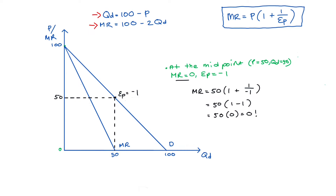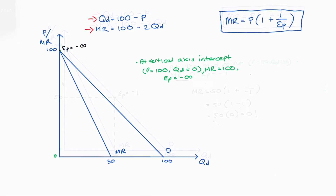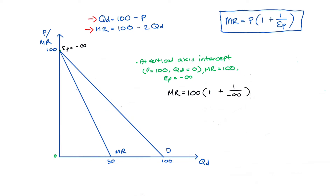Let's now try the vertical axis intercept, where elasticity is negative infinity, price is 100, and quantity is zero. Our formula gives: marginal revenue equals 100 multiplied by 1 plus 1 divided by negative infinity. The question is how do we evaluate 1 divided by negative infinity? This value is technically undefined because negative infinity is not an actual number. What we can do in cases like these is take the limit.